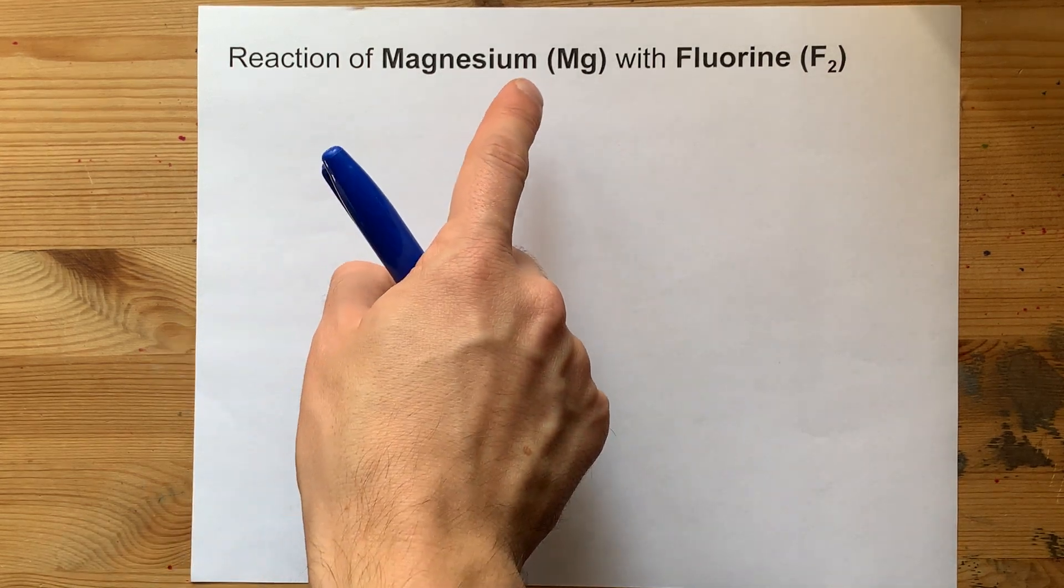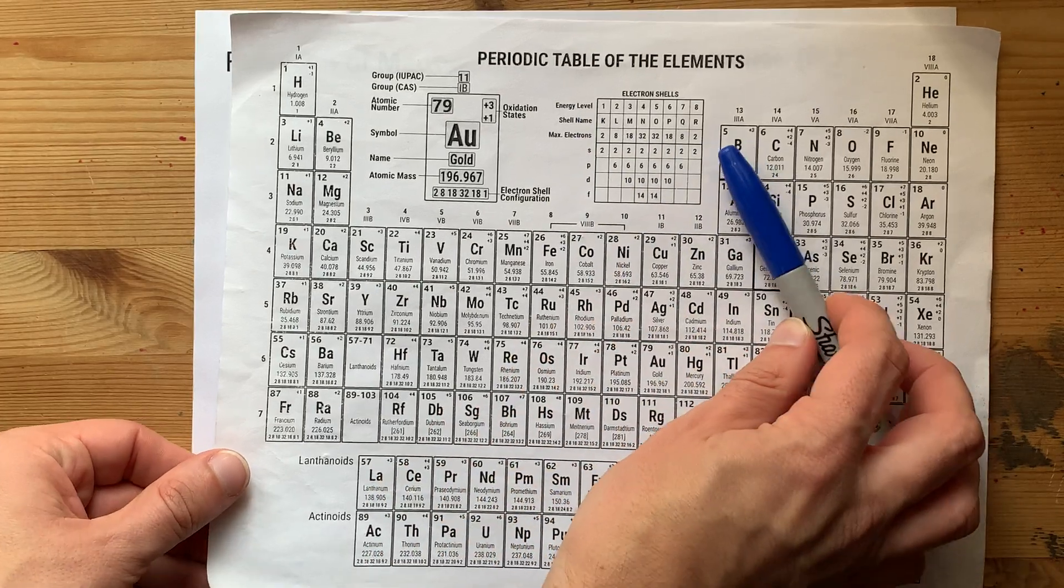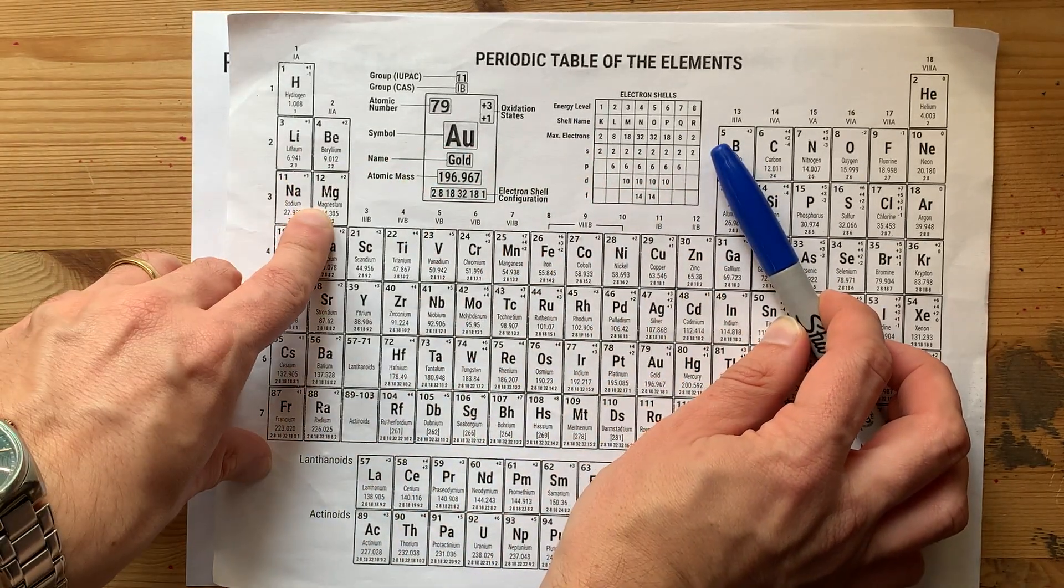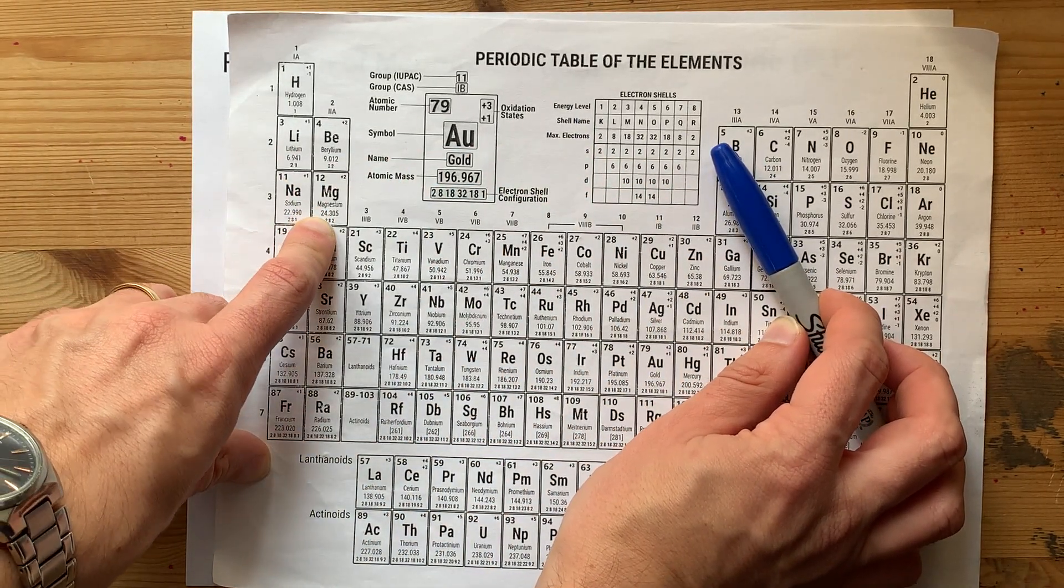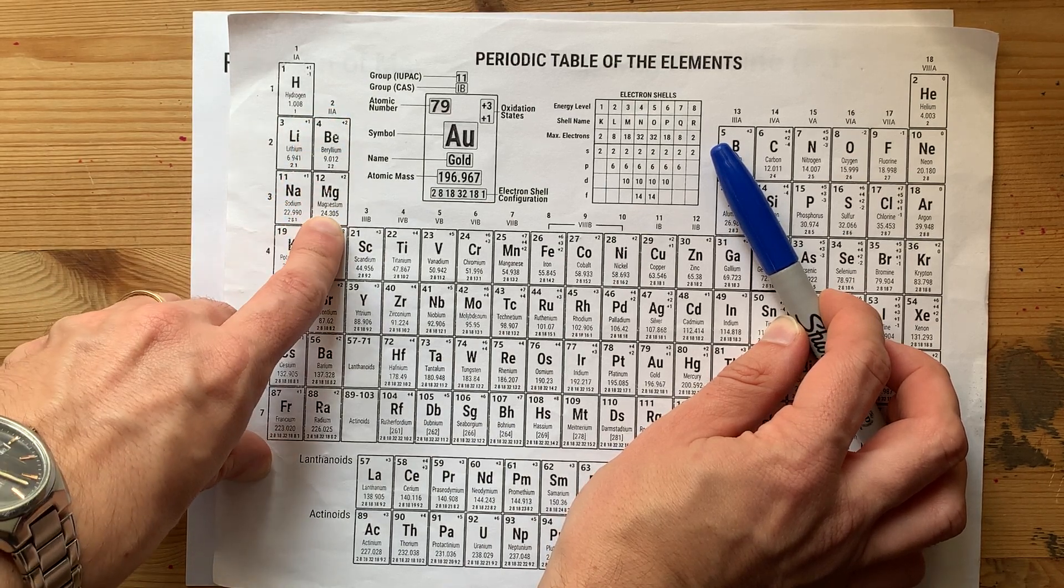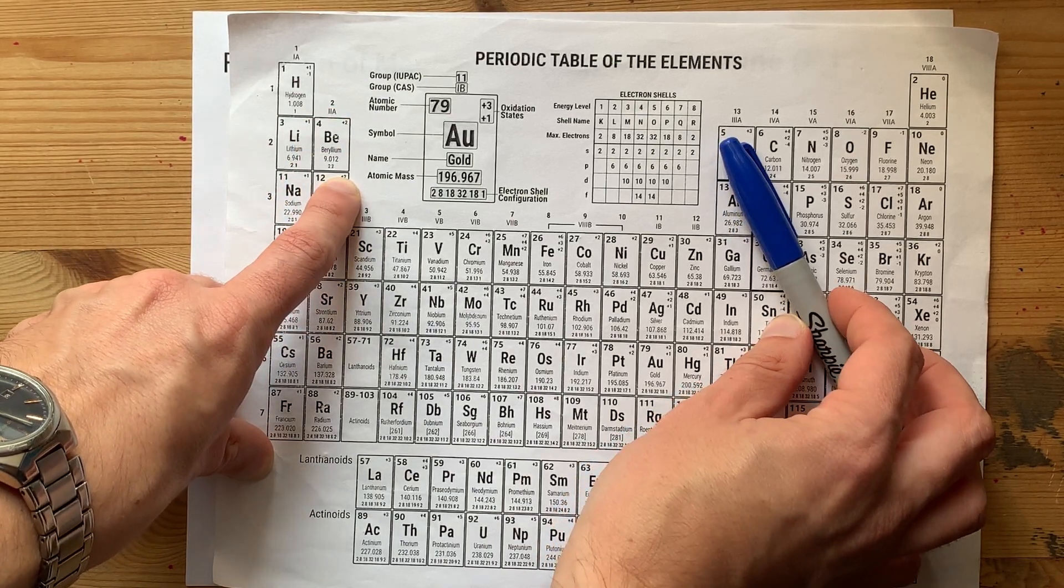What happens if you react magnesium metal with fluorine gas? Well, magnesium is a metal from the left-hand side of the periodic table. It wants to lose its two valence electrons to get a charge of plus two.